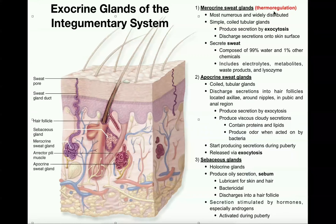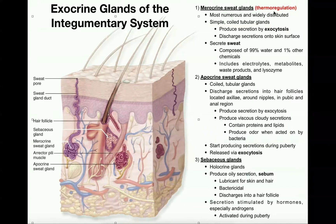Merocrine sweat glands are mostly involved in thermoregulation — that means maintenance of body temperature. If you were to get too hot, you sweat. If you go outside into the hot summer weather, you might sweat, especially if you get into your car that's been sitting out there for two hours. That sweat helps cool you down.